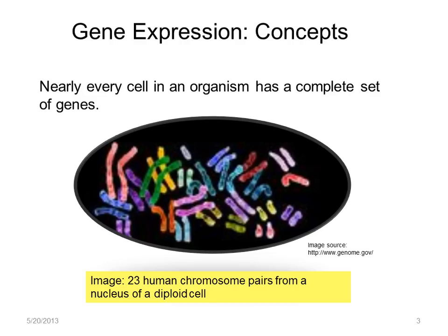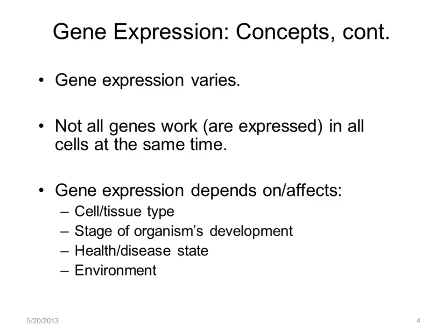I'll start with the simple statement that nearly every cell in an organism has a complete set of genes. However, gene expression varies temporally and spatially. For example, the genes expressed in the skin at a given point in time are different from those expressed in your liver. Gene expression also varies during development and as changed by disease, or going in the opposite direction, altered gene expression may itself result in disease. Even environmental factors can influence gene expression.